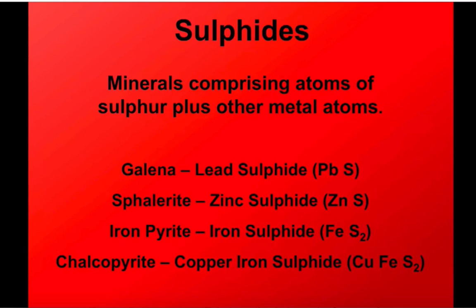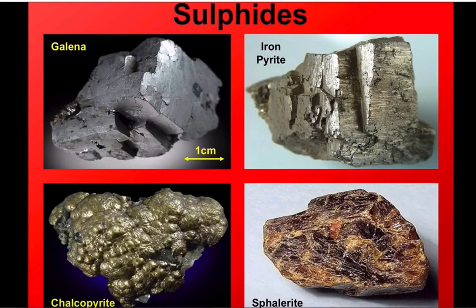Another group that are often used as ore minerals are the sulfides. This is where we get a metal bonded with just sulfur. Galena is lead ore; sphalerite is zinc ore; chalcopyrite is the main copper ore; and there's also iron pyrite. We don't use iron pyrite as an ore mineral because it's much easier to get iron from an oxide than from a sulfide. These create some very distinctive minerals that we will be learning to identify from their properties.